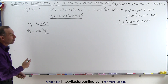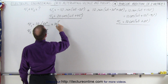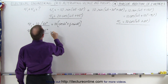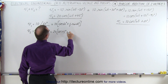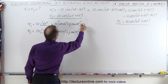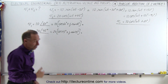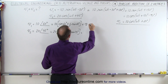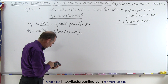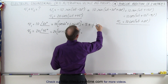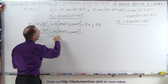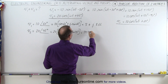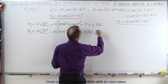Now we want to add those, so we have to write them in terms of real and imaginary parts. V1 can be written as 10 times the cosine of 60 degrees plus j times the sine of 60 degrees, and V2 as 20 times the cosine of 45 degrees plus j times the sine of 45 degrees. As complex numbers: cosine of 60 is 0.5, times 10 gives 5; sine of 60 times 10 gives 8.66 — so V1 is 5 + j8.66. For V2, cosine of 45 is 0.707, times 20 gives 14.14 for the real part, and j times 14.14 for the imaginary part.